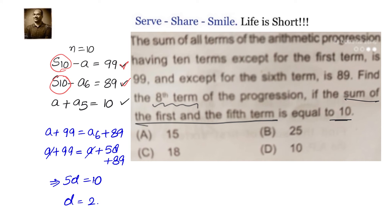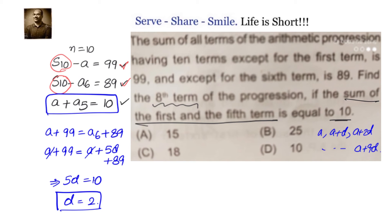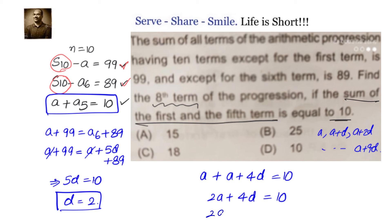The arithmetic progression is a, a+d, a+2d, up to 10 terms, that is a+9d. Now that we have d = 2, we go back to the other condition: a plus a5, that is a plus (a + 4d), equals 10, which gives 2a + 4d = 10. Since d = 2, we get 2a + 8 = 10, so 2a = 2, meaning a = 1.